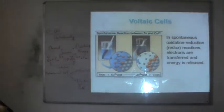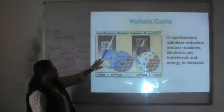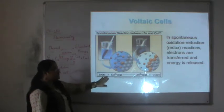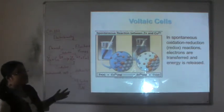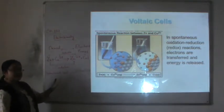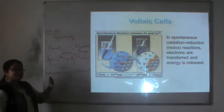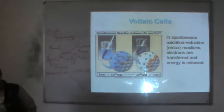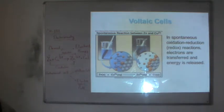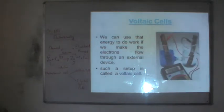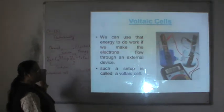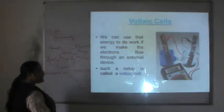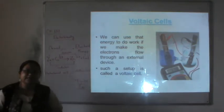A voltaic cell is a device in which chemical energy is converted to electrical energy using a spontaneous reaction. When zinc is placed in copper sulfate solution, zinc solid reacts with copper 2+ to form zinc 2+ and copper. Electrons are transferred in this spontaneous oxidation-reduction reaction. If we make electrons flow through an external circuit, we can use that energy to do work. Such a setup is called a voltaic cell.